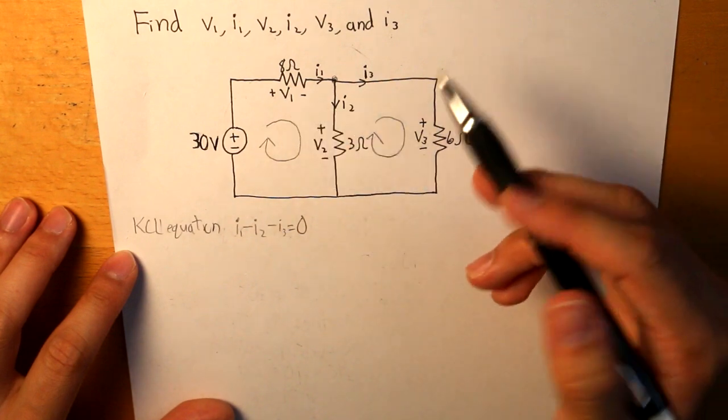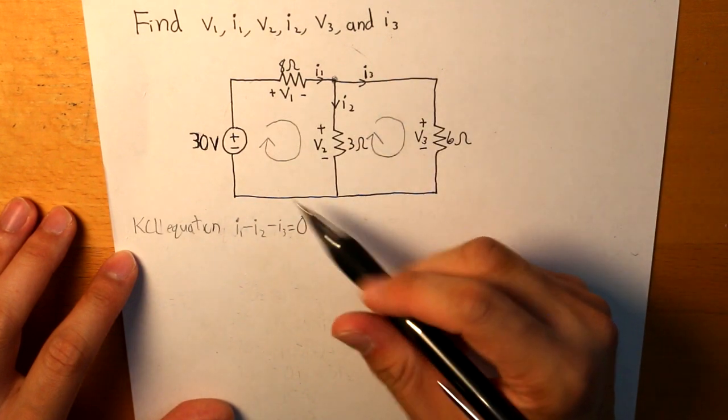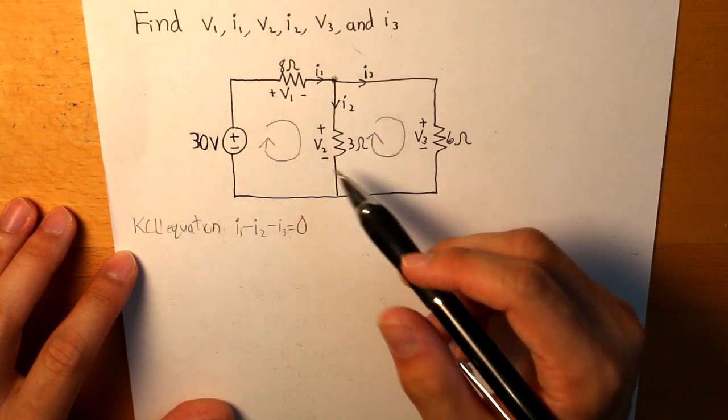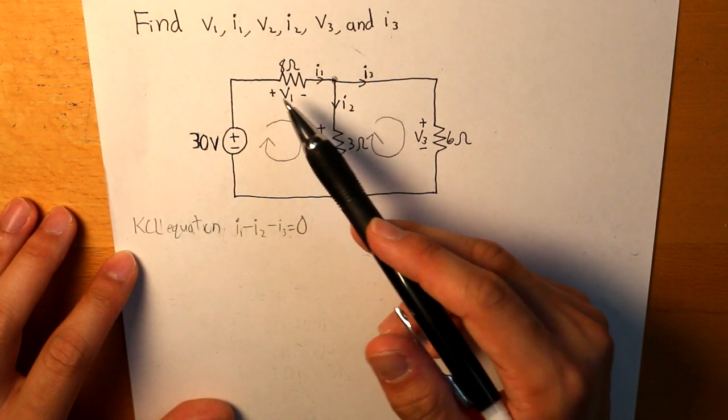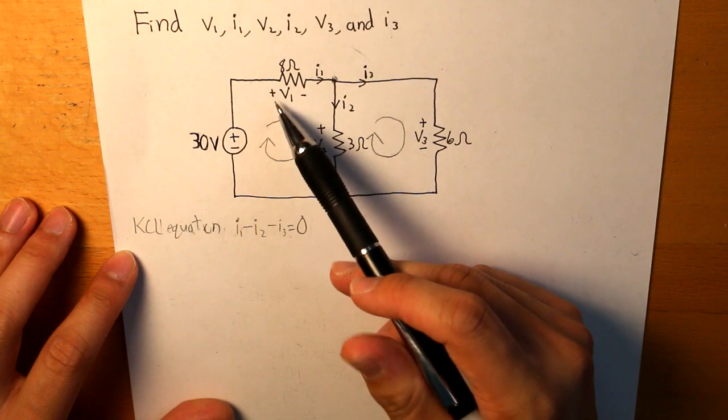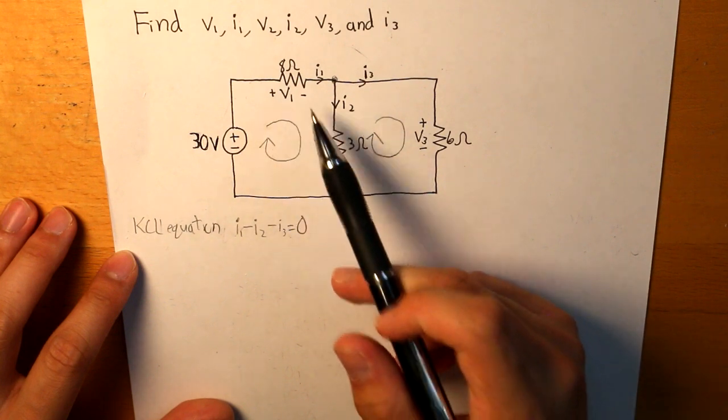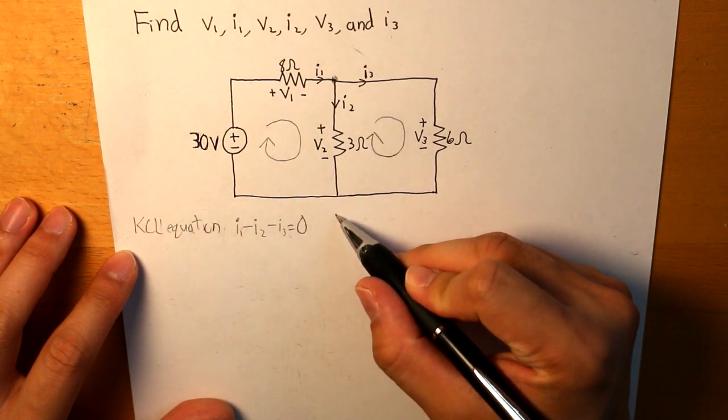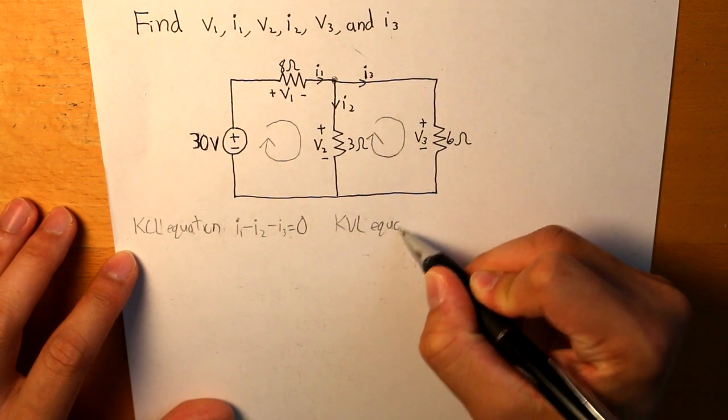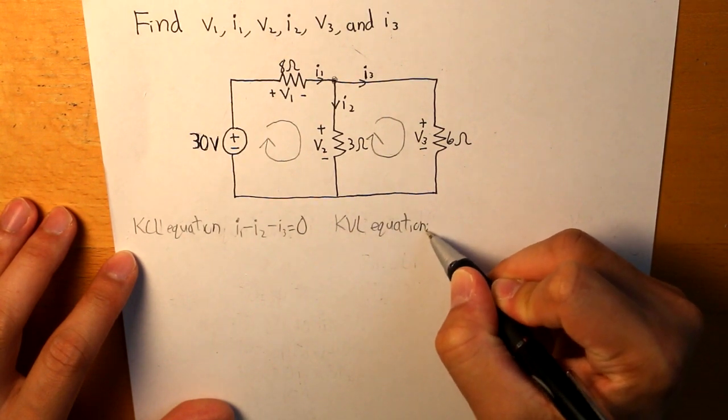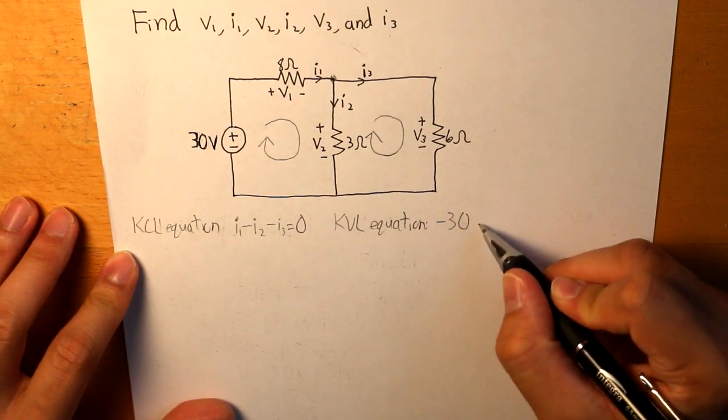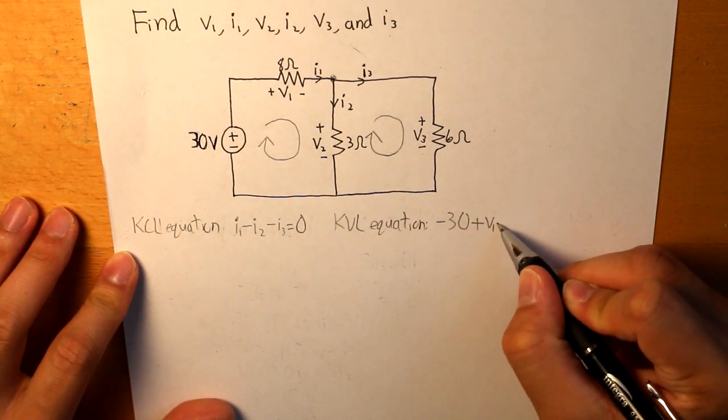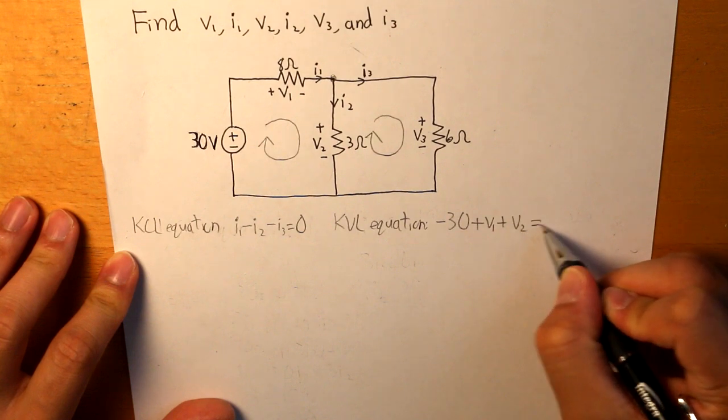And let's look at our first closed loop path. And that first path is, and let's assume that it is positive when it is entering through from the plus to the minus. Therefore, our KVL equation, our first one, would be minus 30 plus V1 plus V2 is equal to 0.